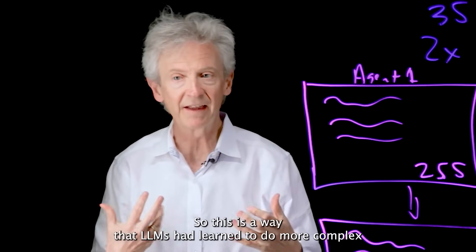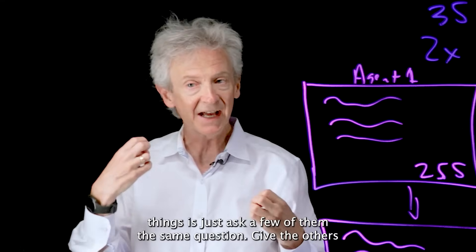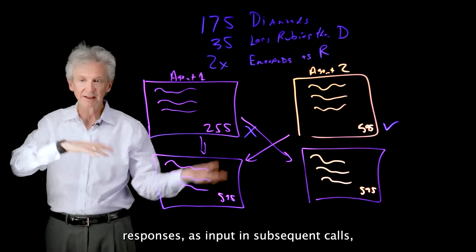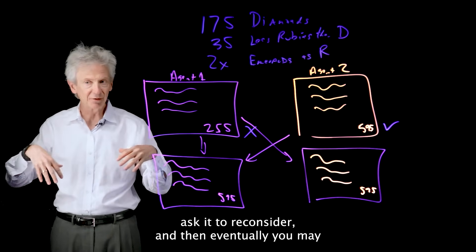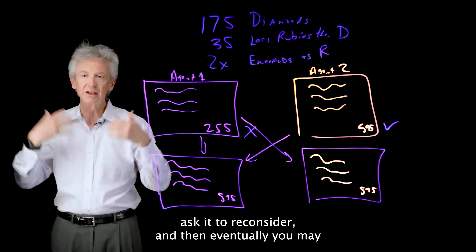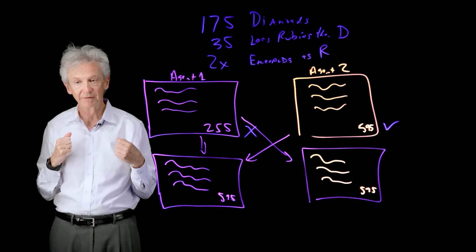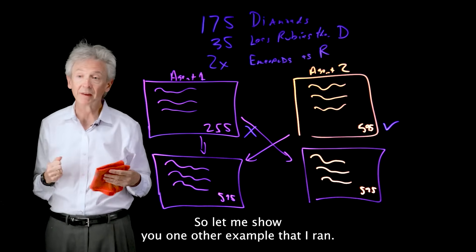So this is a way that LLMs have learned to do more complex things, is just ask a few of them the same question, give the other's responses as input in subsequent calls, ask it to reconsider, and then eventually you may find a consistent answer among the models. So let me show you one other example that I ran.